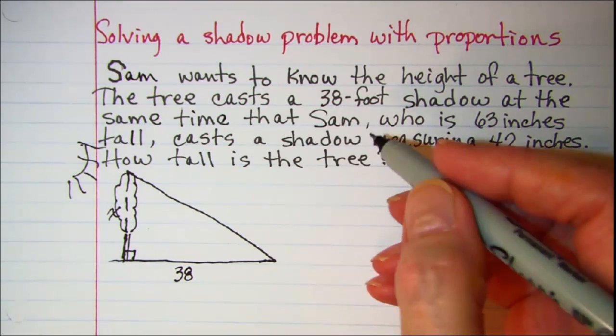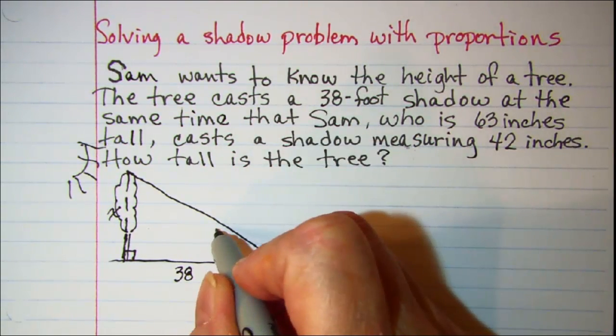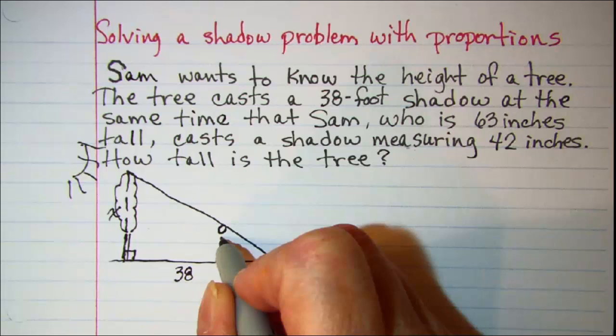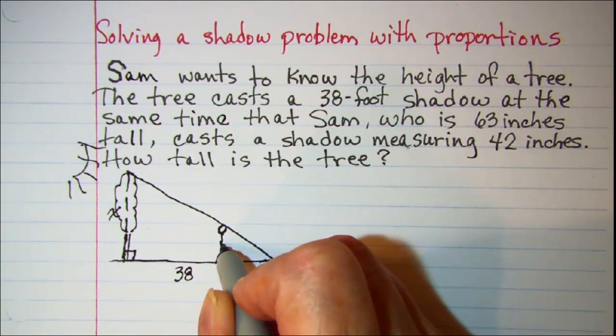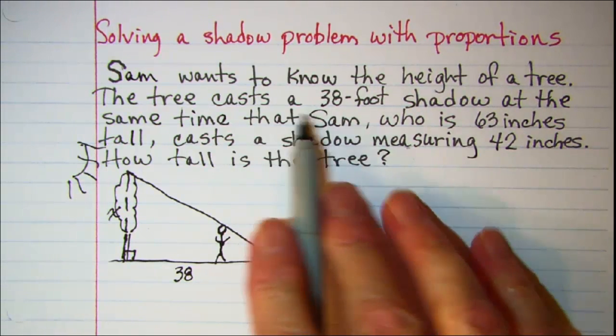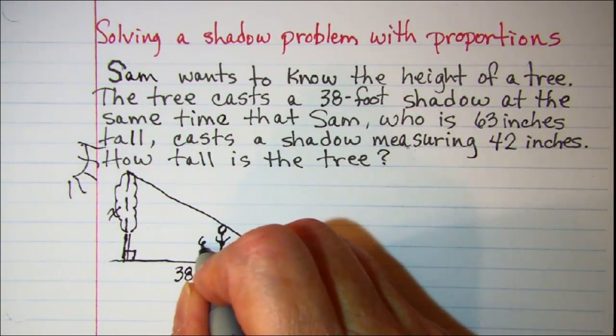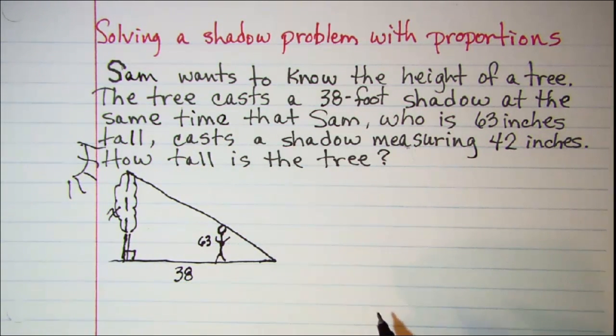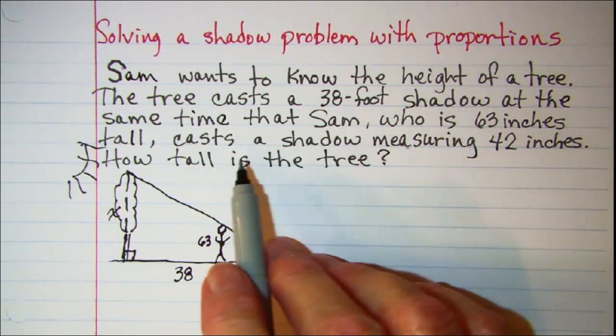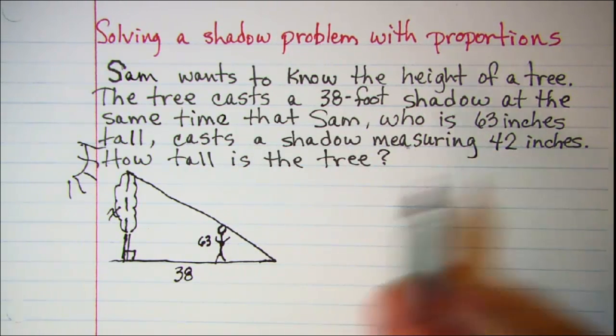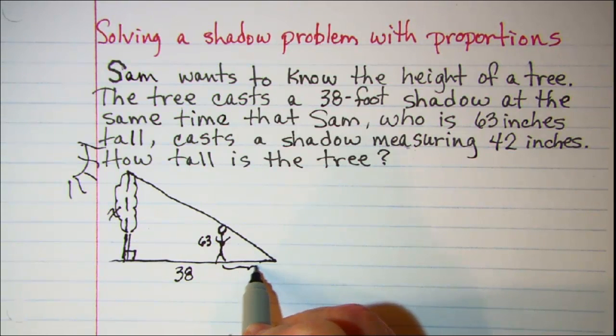Now the person Sam, let's put him right here, and he is 63 inches tall. So his height is 63 and he casts the shadow measuring 42 inches. So this measurement right here is 42.